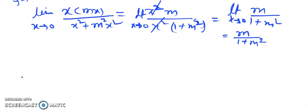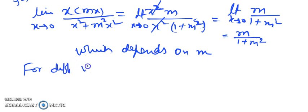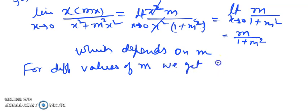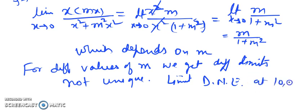Now, m is the slope of the line. Different lines have different values of m, so the answer m/(1 + m²) is not unique. Since the limit depends on m, for different values of m we get different limits. Therefore the limit is not unique, and we can say the limit does not exist at the origin.